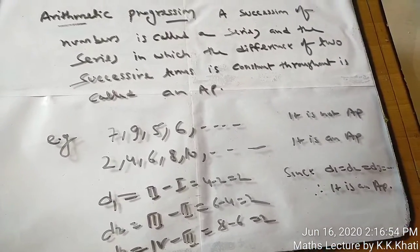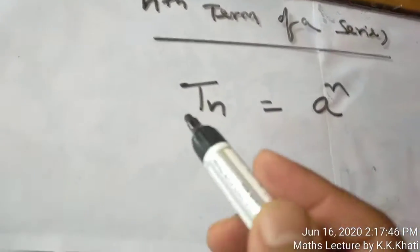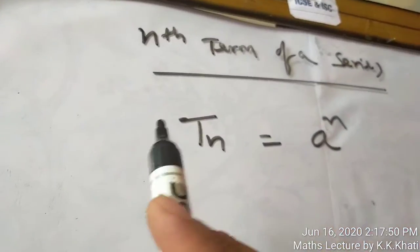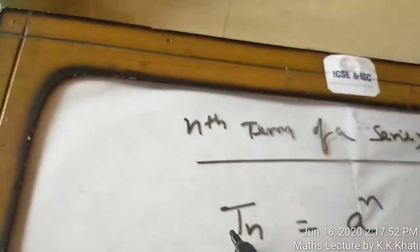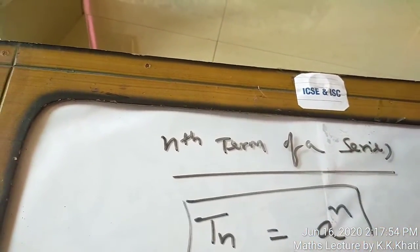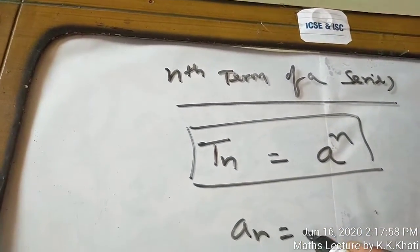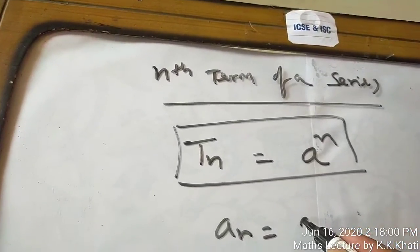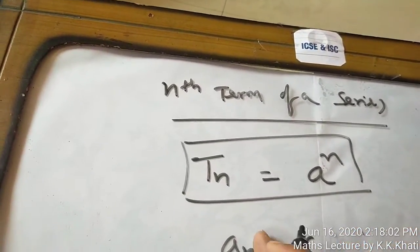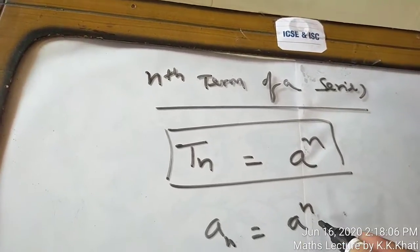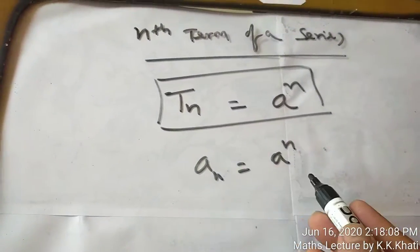Now students, next topic is nth term of a series. If you have an nth term given, you can generate the series. The nth term we write as Tn, or in some books it's written as an. In our book it's written as an, where n is the suffix. For example, an is equal to a to the power n.